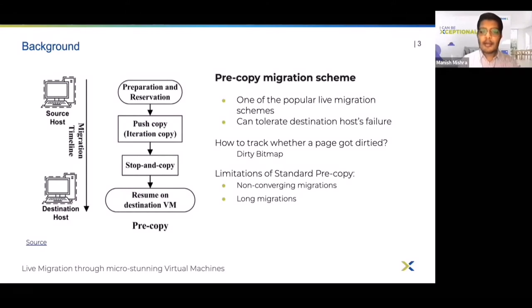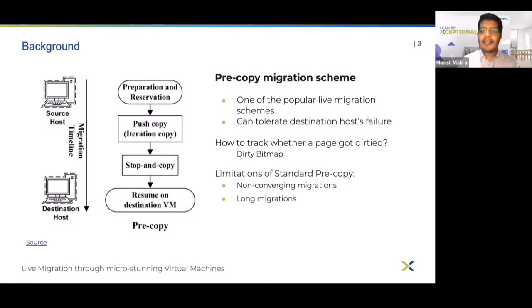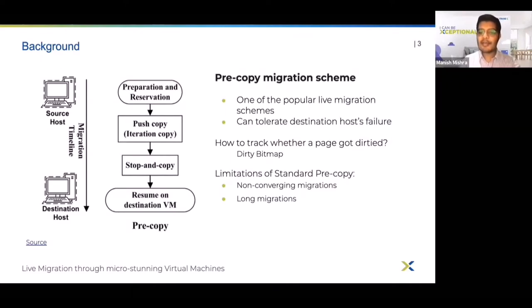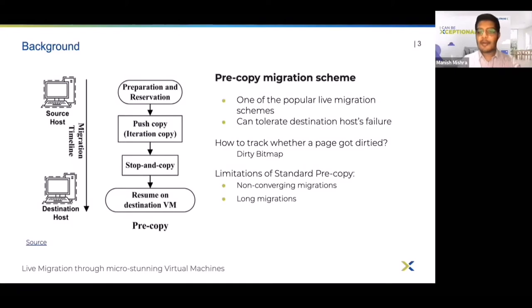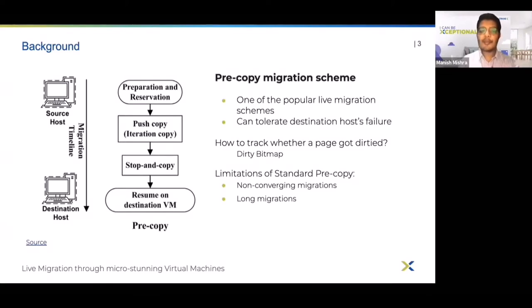In the case of pre-copy live migration, network bandwidth and dirty rate are the two factors which decide convergence. To ensure convergence of live migration, the dirty rate of the VM should be less than the network throughput.